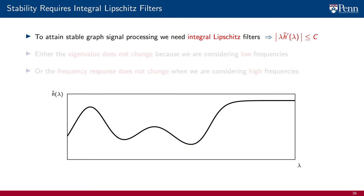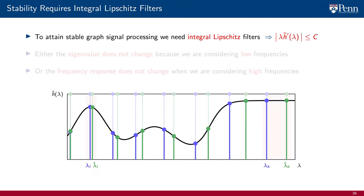The solution to this conundrum is to use integral Lipschitz filters, in which we limit the derivative of the filter's response to be inversely proportional to lambda. These filters obtain a stable graph signal processing.